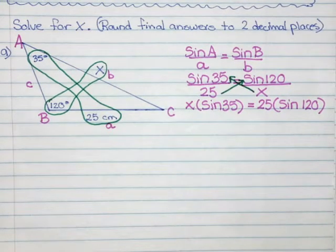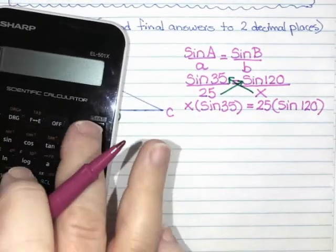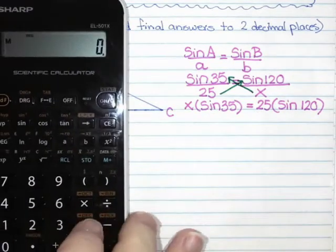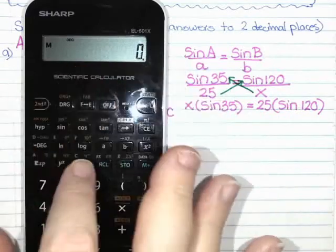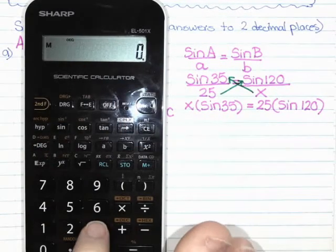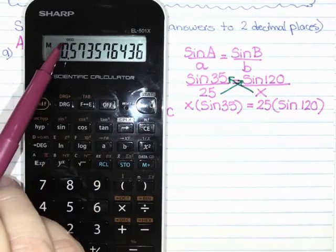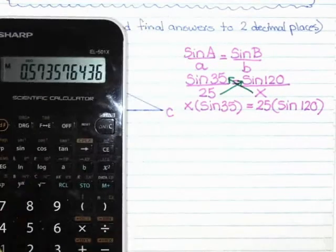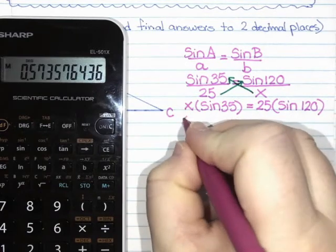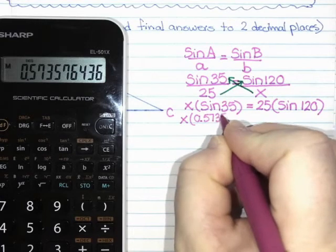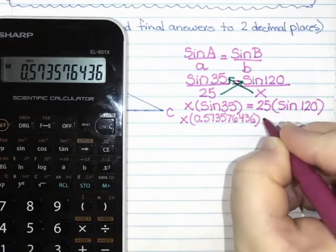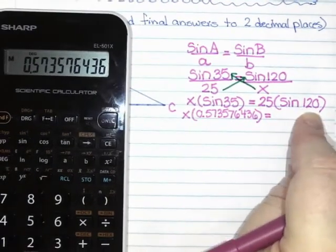From here you have a choice. I'll walk you through two different things you could do. Option one: you can use decimals, but if you choose decimals you have to write down all the decimal places. I could work out sine of 35. If you see what you type on screen you press sine 35. I have to do 35 and sine. I'll keep every single decimal place. So x times 0.573576436 equals, and then 25 times sine of 120.